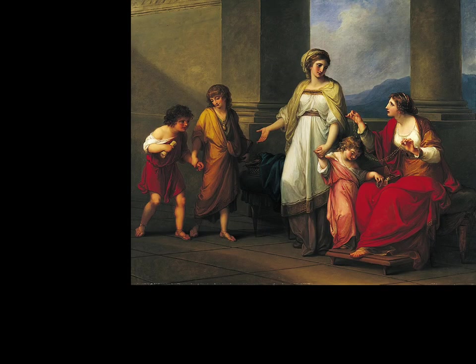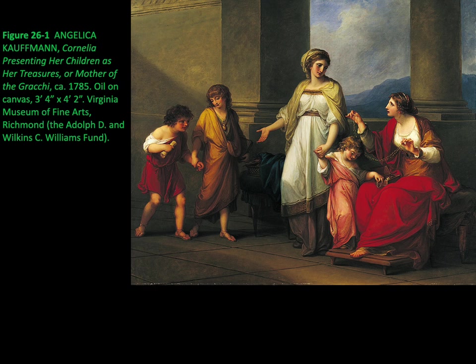Now let's look at some characteristics of neoclassical art. This painting is titled 'Cornelia Presenting Her Children as Her Treasures,' or 'Mother of the Gracchi.' This takes place after a visitor has shown off her fine jewelry and haughtily insists that Cornelia show hers. Instead of taking out her own precious adornments, Cornelia brings her sons forward, presenting them as her jewels. This is an example of virtue drawn from Greek and Roman history and literature.